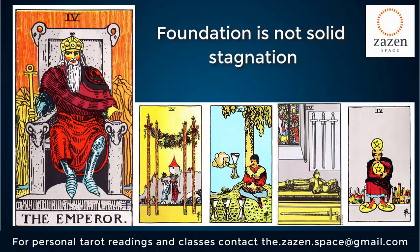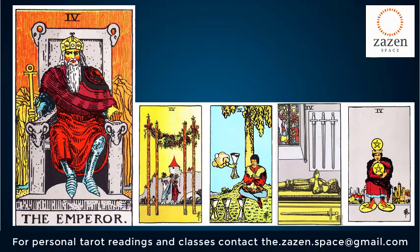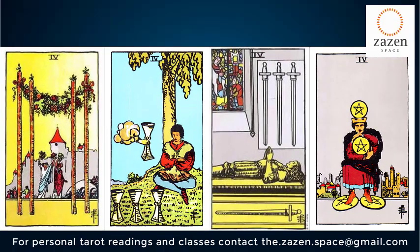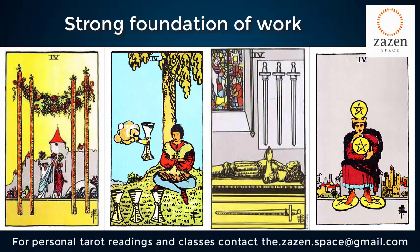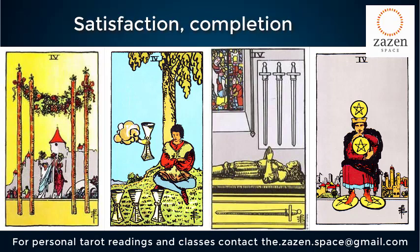There are four fours, one for each suit. The Four of Wands is a very positive card in itself. We are combining the root keyword of the fours — stability — with the keyword of Wands, which is work, fire, energy, karma, and action. Combining stability with action means our work has achieved what it was set out to achieve, giving a sense of satisfaction and completion related to work. In the Four of Wands we see stability in terms of work — it is a good card.